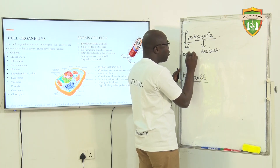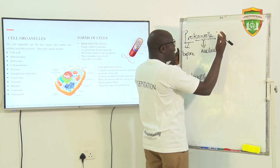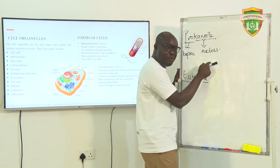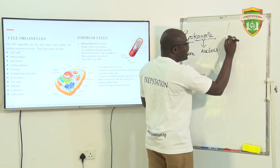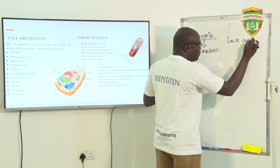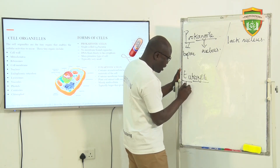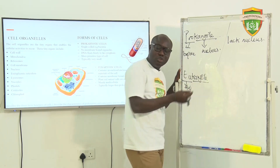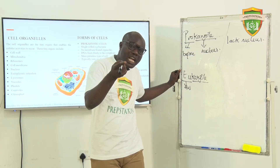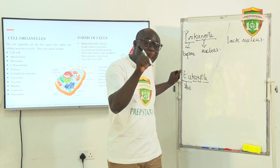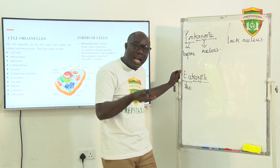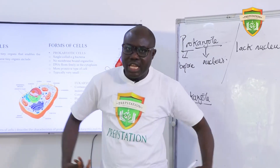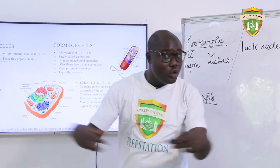'Pro' means 'before,' meaning that prokaryotic organisms exist before nucleus — in other words, they lack a nucleus. 'Eu' means 'true nucleus,' so eukaryotic organisms have a true nucleus, while prokaryotic organisms do not. But please don't be confused — not having a nucleus doesn't mean they don't have the content of the nucleus. The genetic materials are there; they are just swimming freely in the cytoplasm with no enclosure.